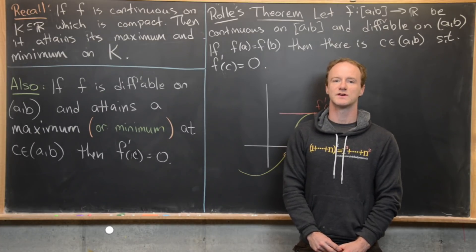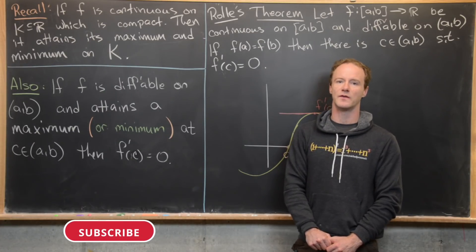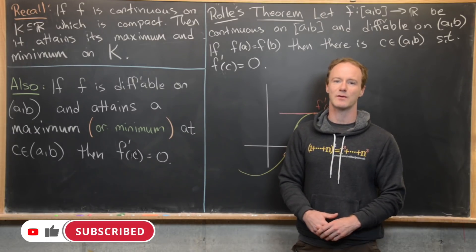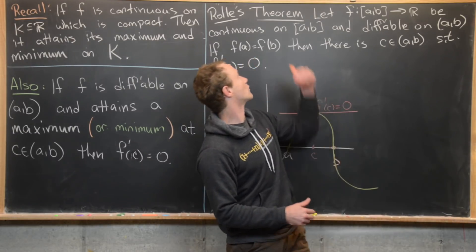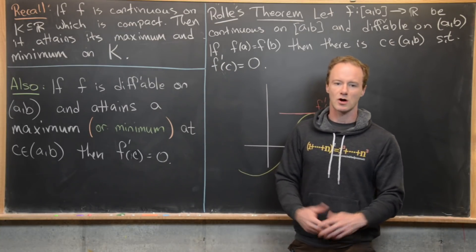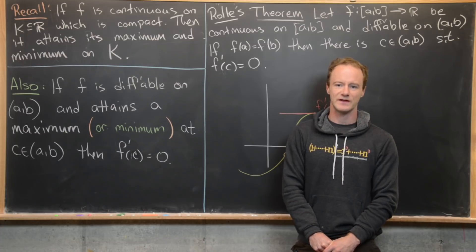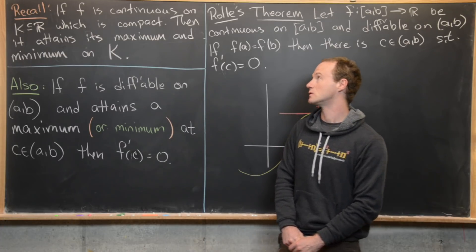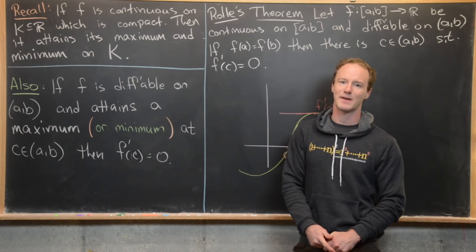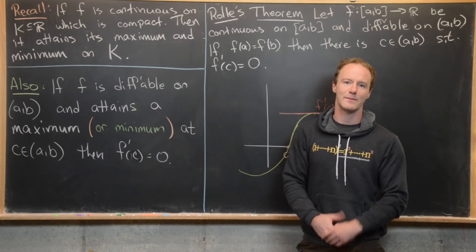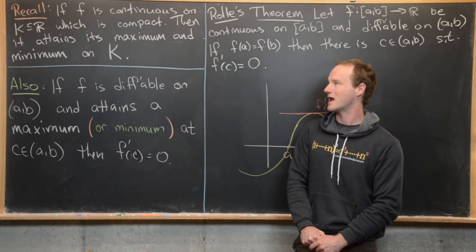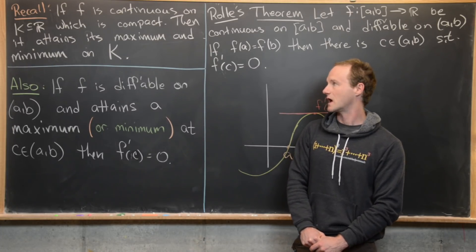Here we're going to prove a really important result in single variable calculus called the mean value theorem. We're going to take a two-step approach by first proving Rolle's theorem. Before we do that, I want to recall two results that we've proven in previous videos that we will use as tools. The first one says that if F is continuous on a compact set K, then it attains its maximum and its minimum on K.